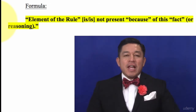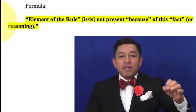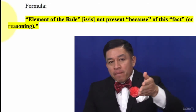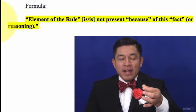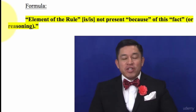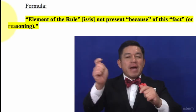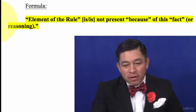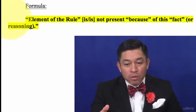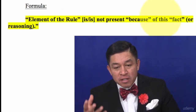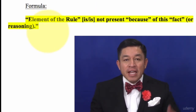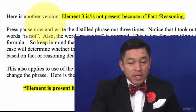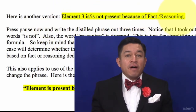I want you to know this formula through muscle memory, and muscle memory is developed through repetition — so that you do it automatically. Here's the formula: 'Element of the rule is or is not present because of this fact or reasoning.' Here's another version: 'Element 3 is or is not present because of the fact or the reasoning.'